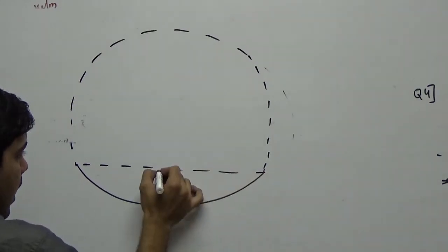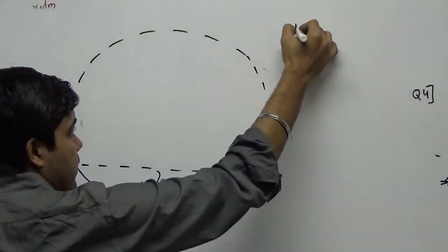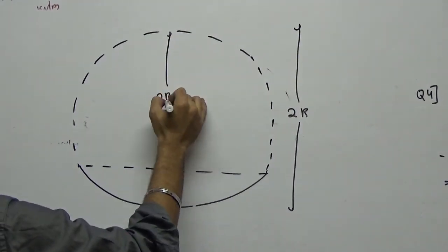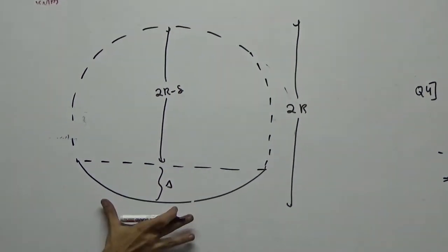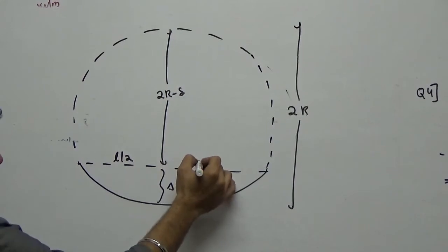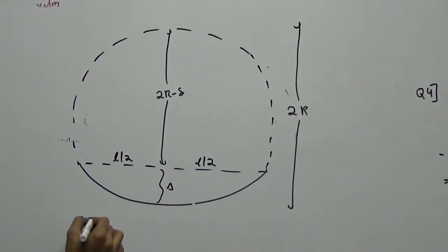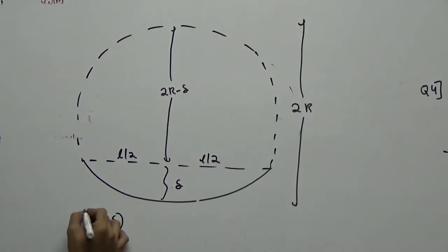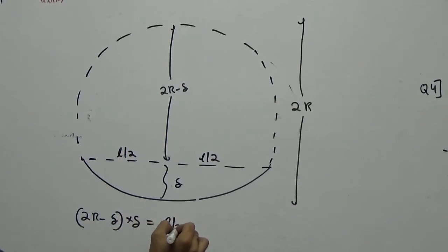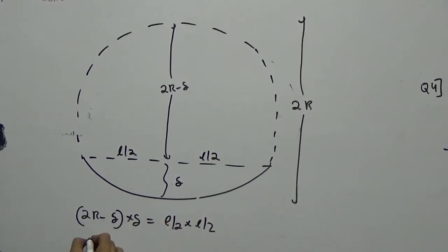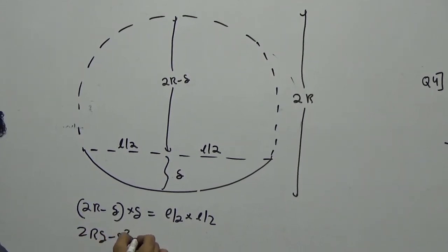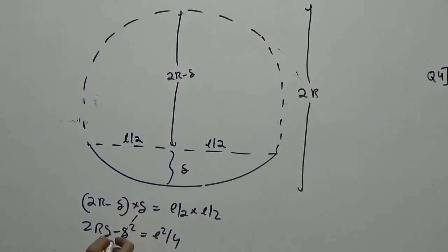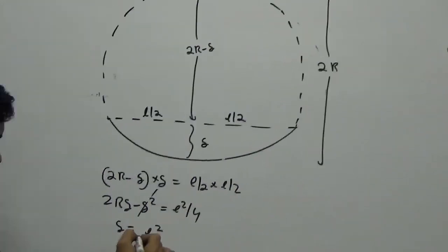Right now, this is your beam. This is your delta. I can say this is 2R. If this is 2R, can I say this is 2R minus delta? This total span is L. You have this as L by 2 and this as L by 2. So 2R minus delta into delta is equal to L by 2 into L by 2. We have 2R delta minus delta square is equal to L square by 4. Delta is a small value, so delta square will be very small. So your delta value is L square upon 8R.